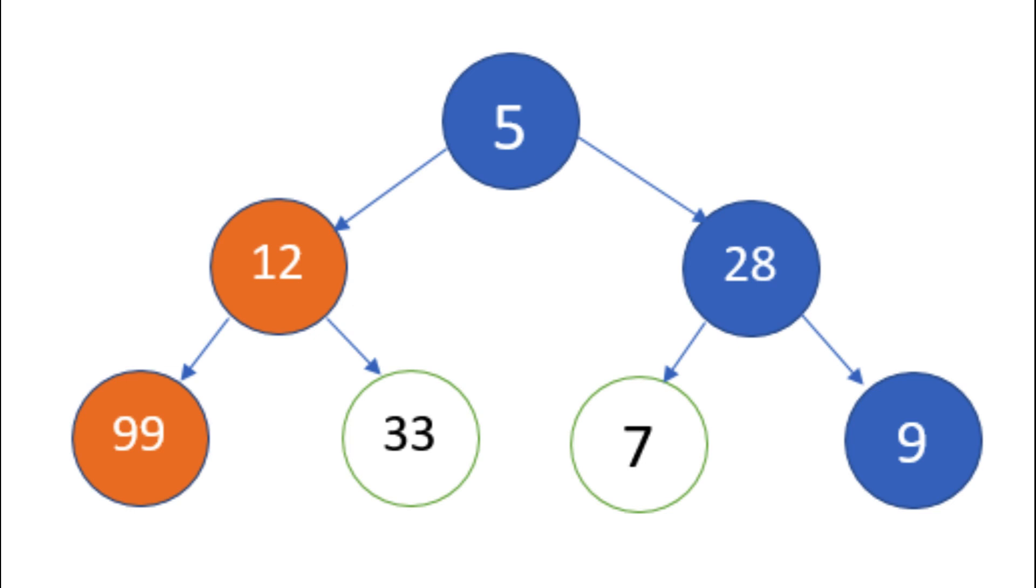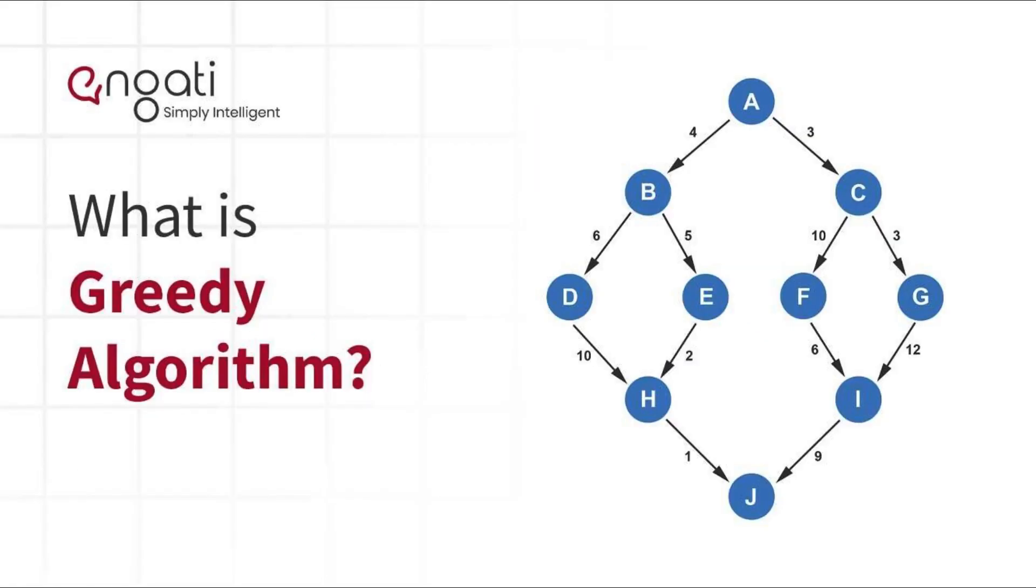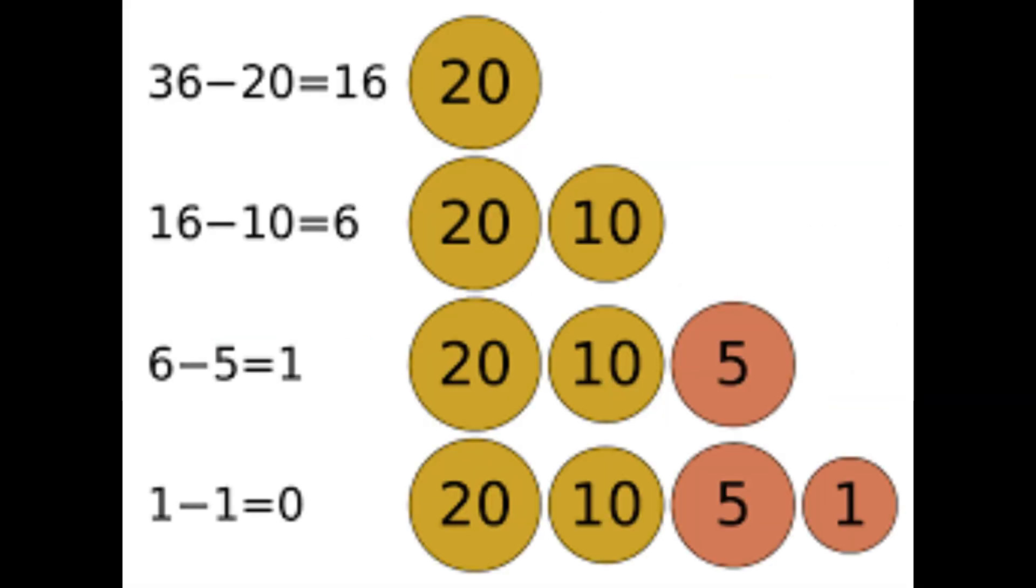In summary, a greedy algorithm is an algorithmic strategy that makes locally optimal choices in the hope of finding a globally optimal solution, and it's especially effective when solving certain types of optimization problems where a problem can be broken down into smaller subproblems. However, careful analysis is required to determine if a greedy approach will lead to the best possible solution in a given scenario.